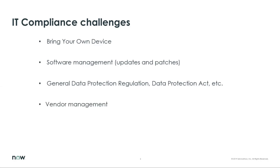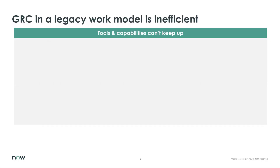The fourth challenge is vendor management. The major vulnerability of many companies comes from electronic data interchanges and vendor system integrations. Managing not only vendor information security but also vendor compliance with privacy law is a major undertaking. Fifth but not the least is IoT. With the proliferation of the Internet of Things, there is explosive growth in the number of endpoints and interconnected devices, resulting in a huge number of vulnerabilities, making it challenging for IT to manage all these risks.